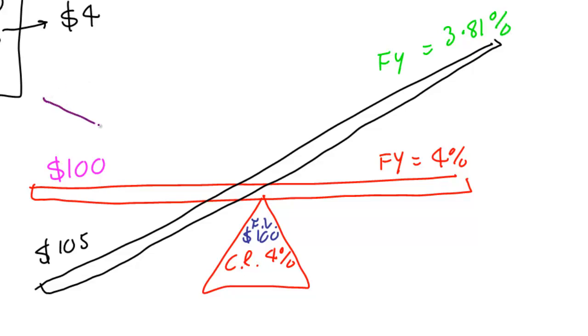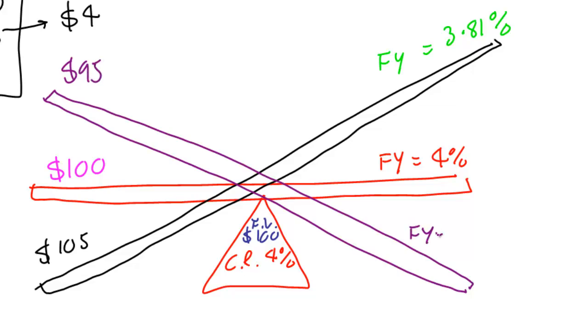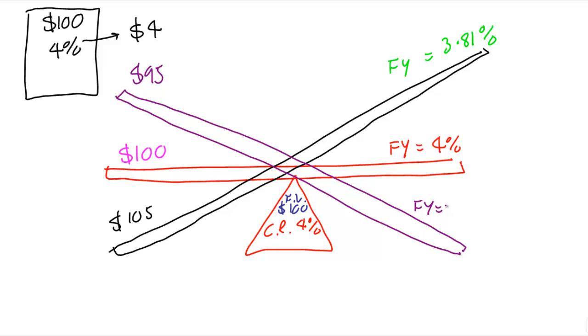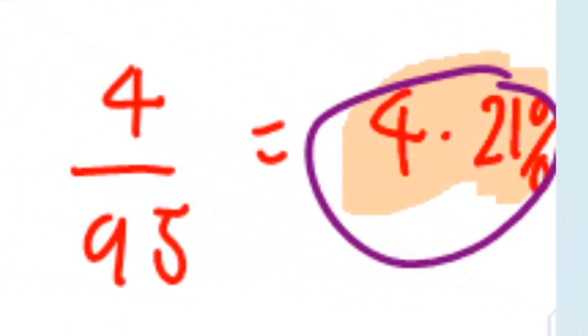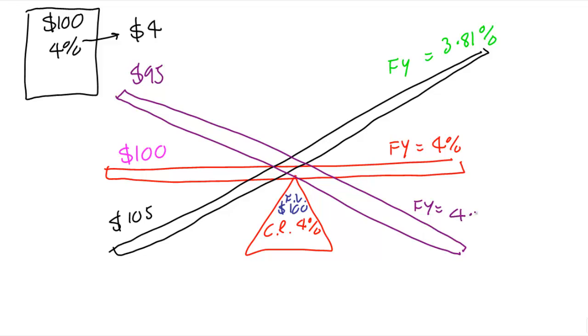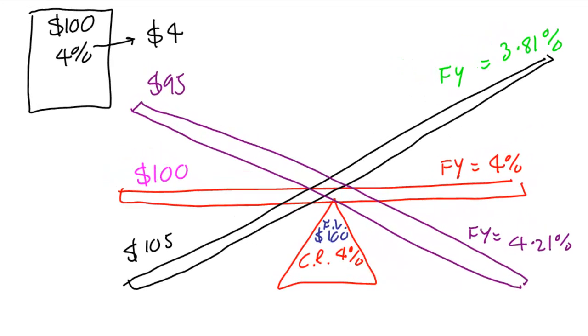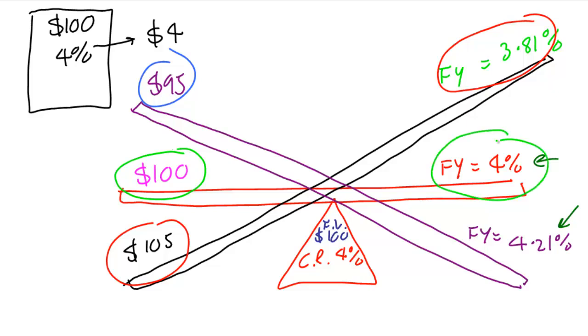And when we go for a light bond, when we only pay a lighter than normal price of $95, then it's a flat yield which is higher than the coupon rate. 4.21% when we get a discount bond, so 4.21%. So the flat yield is heavier than the coupon rate when we pay a lighter price, and the flat yield is lighter than the coupon rate when we pay a heavy price. And when we pay the exact price, the flat yield is the exact coupon rate.